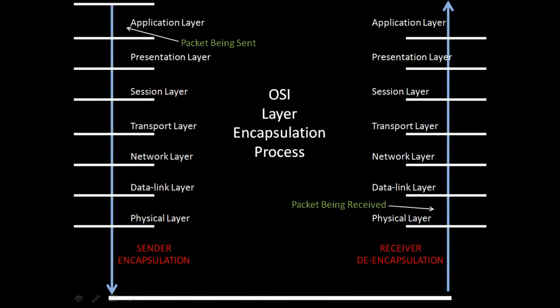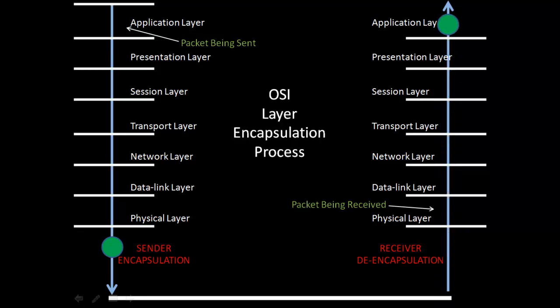Let's further examine the OSI layer encapsulation process. When encapsulation takes place on the sender, a packet starts out at the highest layer — the application layer — and travels down through the lower layers to the physical layer, where it is finally sent out across the network media. When that packet arrives at its destination, it then goes through the de-encapsulation process, which is simply encapsulation in reverse: starting at the lowest layer, then traveling upward to the top layer.